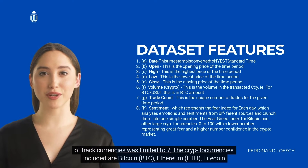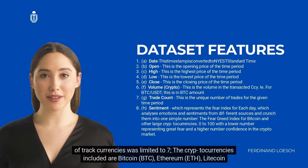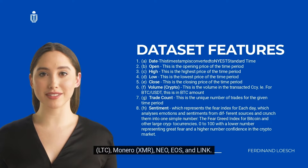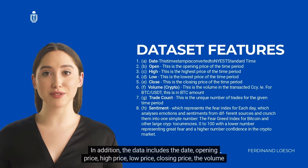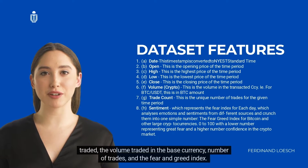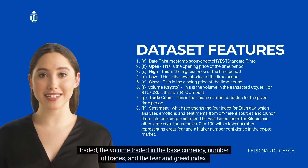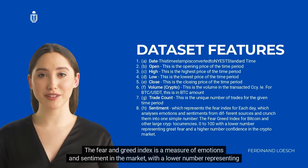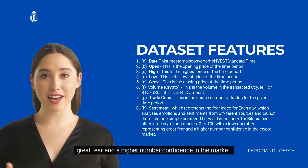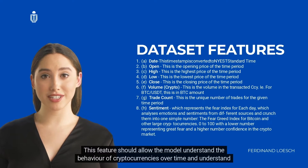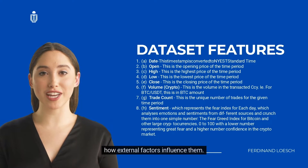The cryptocurrencies included are Bitcoin (BTC), Ethereum (ETH), Litecoin (LTC), Monero (XMR), NEO, EOS, and LINK. The data includes date, opening price, high price, low price, closing price, volume traded, volume in base currency, number of trades, and the fear and greed index. The fear and greed index is a measure of market emotions and sentiment — a lower number representing great fear and a higher number representing confidence. This feature should help the model understand cryptocurrency behavior and how external factors influence it.